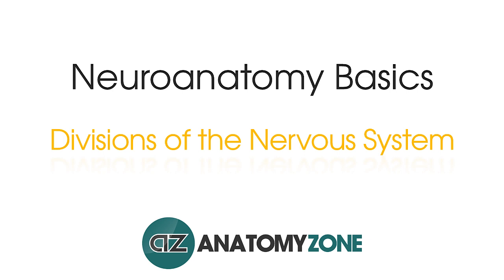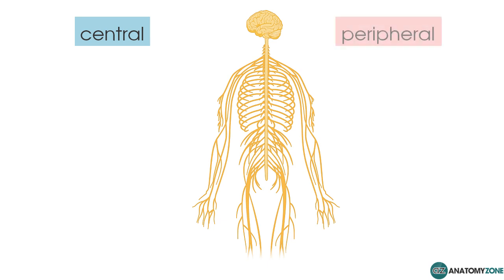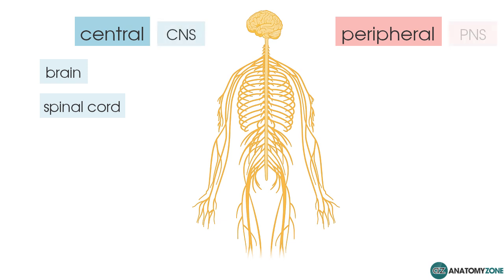Hi, this is Peter from Anatomy Zone and in this Neuroanatomy Basics tutorial, we're going to take a look at the divisions and the organization of the nervous system. The nervous system is divided into the central nervous system and the peripheral nervous system. I'll refer to the central nervous system as the CNS and the peripheral nervous system as the PNS.